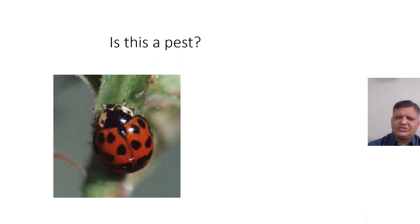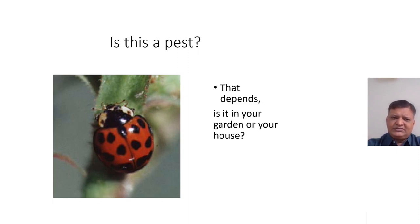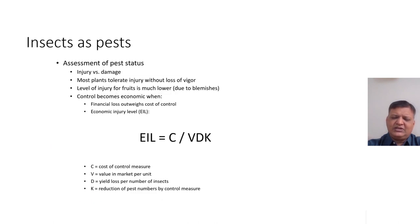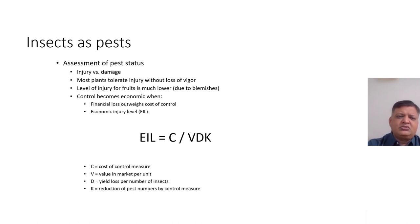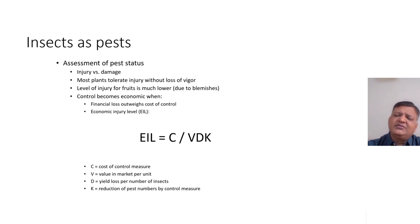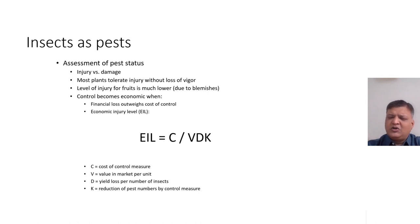Is this a pest? If I ask you this question, it depends on where it is. If it is in the garden, then it is a pest. The variety of insect can be evaluated based on these aspects. Assessment of pest status can be calculated with help of these calculations. You should know that if the cost of control measures exceeds the damage caused by the pest, then that particular method cannot be much feasible. With this formula — cost of control measures, value, yield, and total economic damage — we can calculate how much damage is occurring.